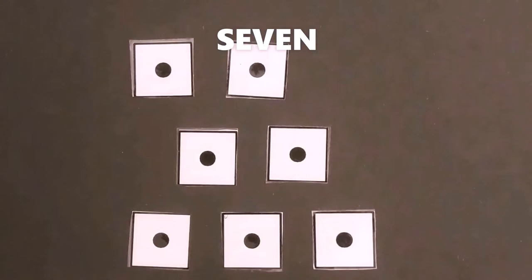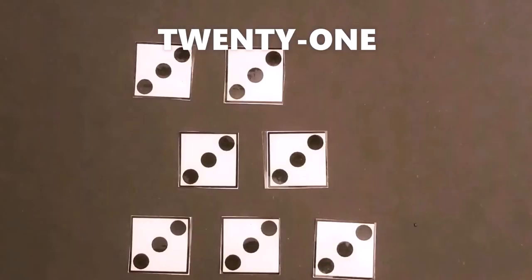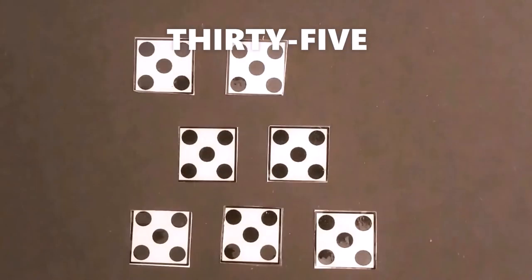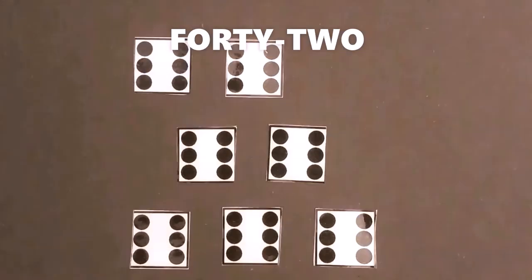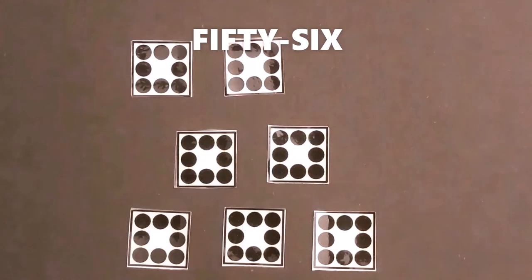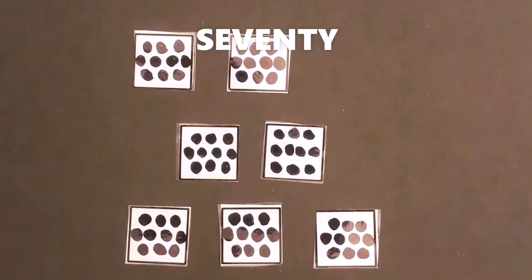Seven times seven is twenty-nine — twenty-eight, thirty-five, forty-two, forty-nine, fifty-six, sixty-three, seventy.